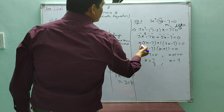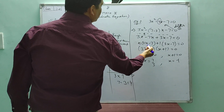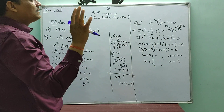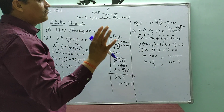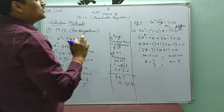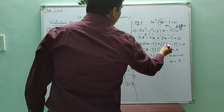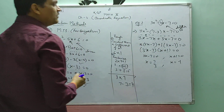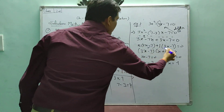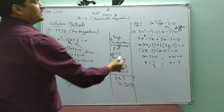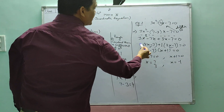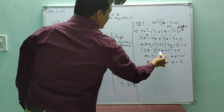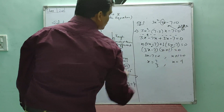From the first two terms, x is common, and from the last two terms, 1 is common. Taking 1 as common gives the bracket (3x minus 7). Now these two brackets are the same, so we take (3x minus 7) as common. The remaining part is x plus 1. So: (3x minus 7)(x plus 1) equals to 0.